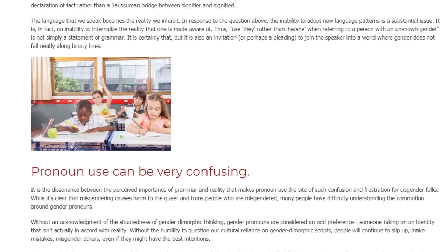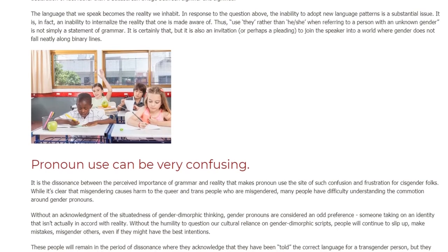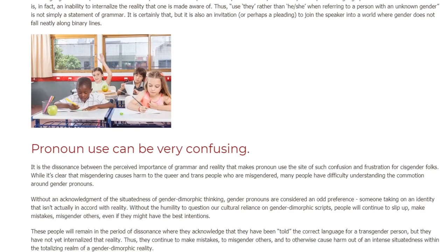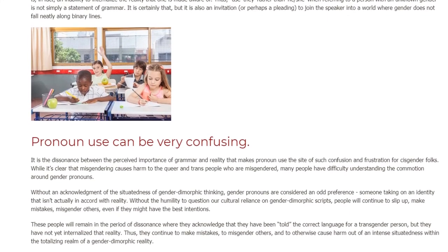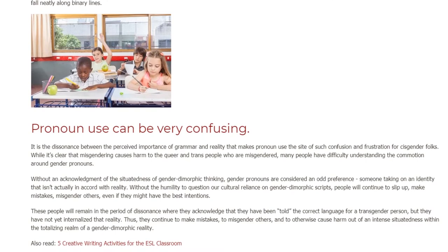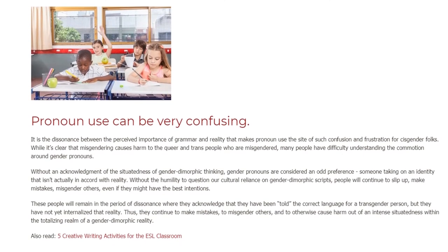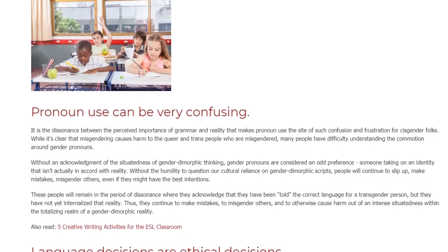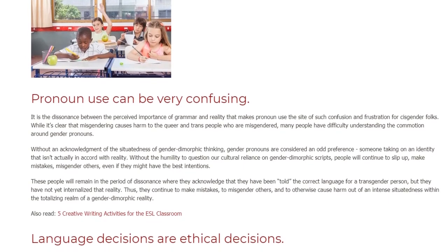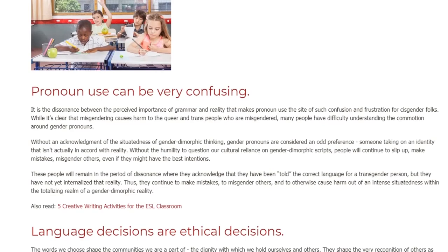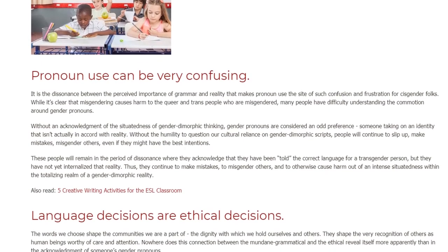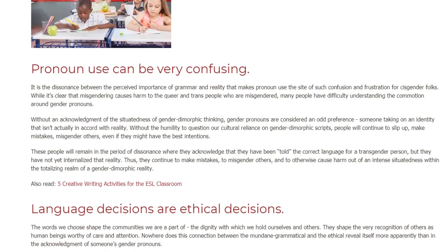Pronoun use can be very confusing. It is the dissonance between the perceived importance of grammar and reality that makes pronoun use the site of such confusion and frustration for cisgender folks. While it's clear that misgendering causes harm to the queer and trans people who are misgendered, many people have difficulty understanding the commotion around gender pronouns. Without an acknowledgment of the situatedness of gender dimorphic thinking, gender pronouns are considered an odd preference — someone taking on an identity that isn't actually in accord with reality. Without the humility to question our cultural reliance on gender dimorphic scripts, people will continue to slip up, make mistakes, and misgender others, even with the best intentions.